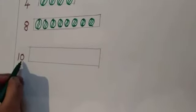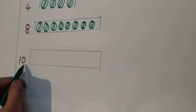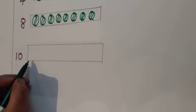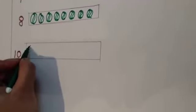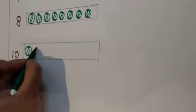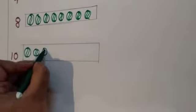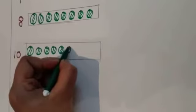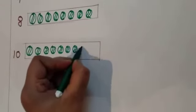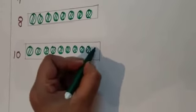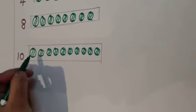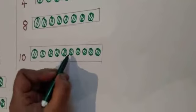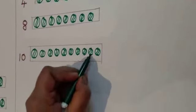Which number is this? Number 10 — 1, 0, 10. So now we have to draw here. How many balls? 10 balls. Very good, now start. 1, 2, 3, 4, 5, 6, 7, 8, 9, 10. Let's count it again: 1, 2, 3, 4, 5, 6, 7, 8, 9, 10.